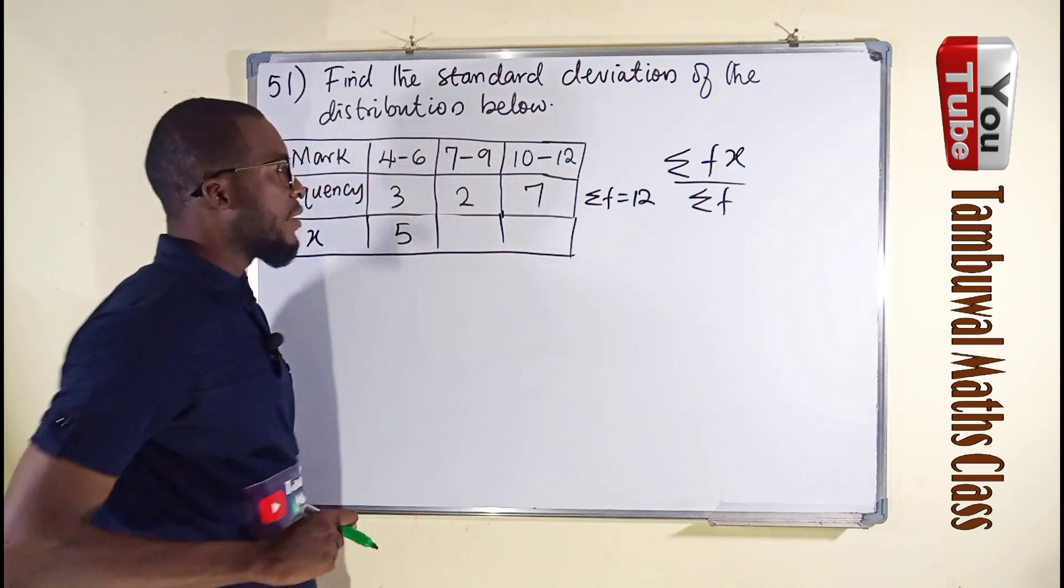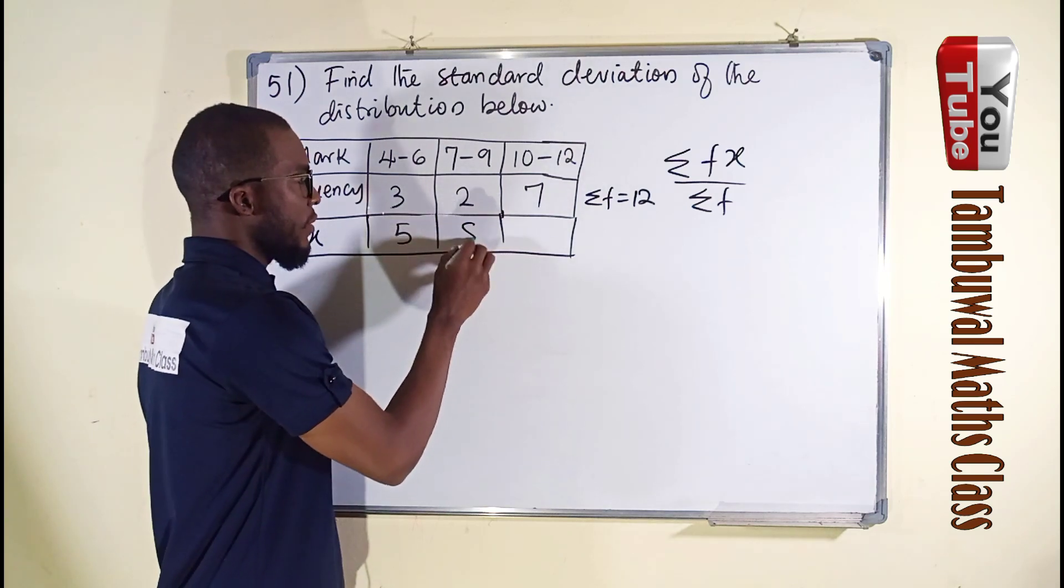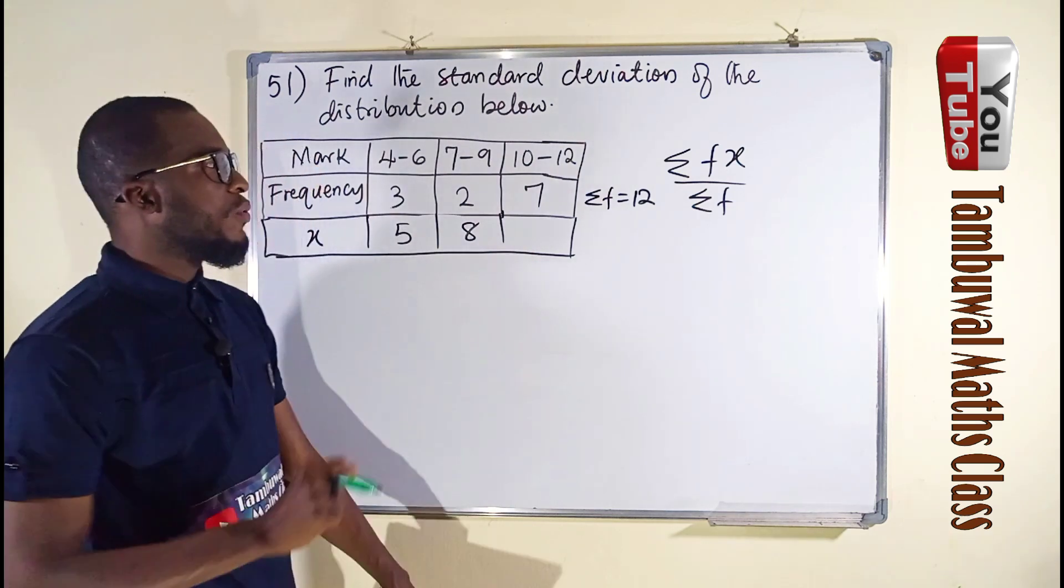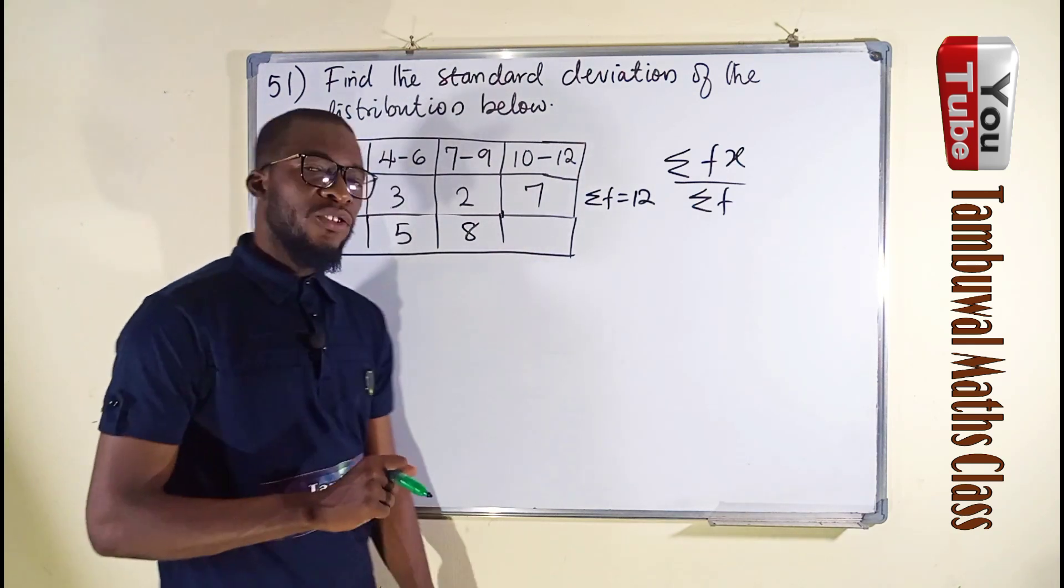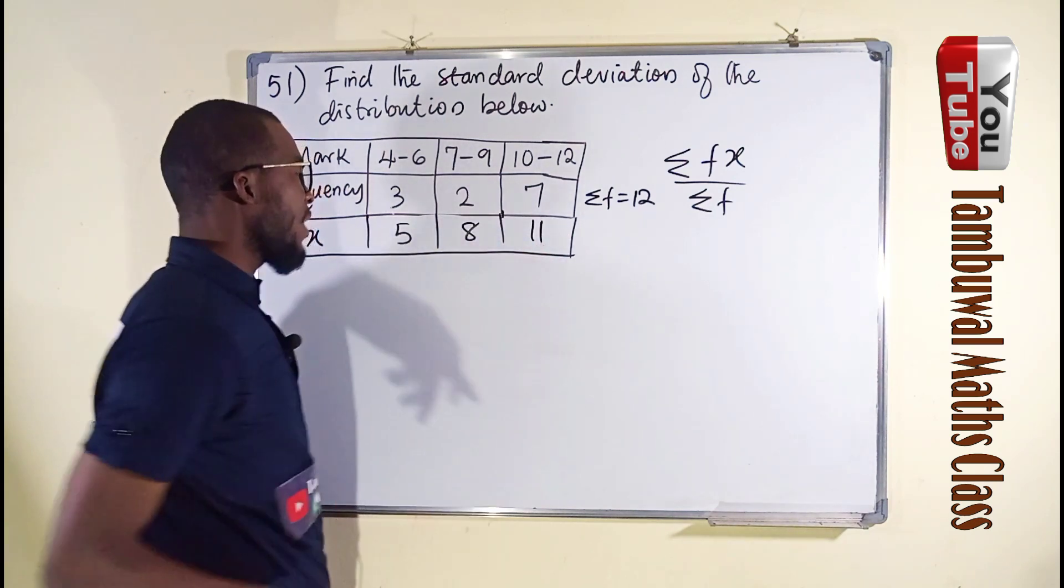7 plus 9 is 16, and 16 divided by 2 is 8. 10 plus 12 is 22, divided by 2 is 11. We have 11 here.